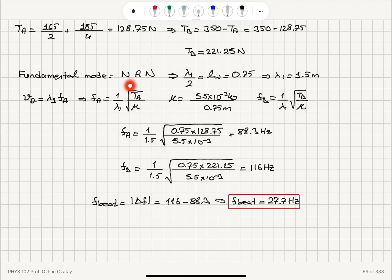And tension B can be found using this relationship. And the fundamental mode is node-anti-node node. Node-anti-node node. So lambda_1 over 2, the distance between two nodes is the length of the wire. So lambda_1 is 1.5 for both of them. The propagation speed V is equal to lambda times F. So the frequency is 1 over lambda square root V. 1 over lambdas are the same. The square root of tension over mu, 1 over lambda times V, will be different because we have different tensions.